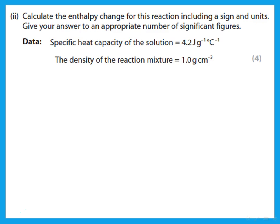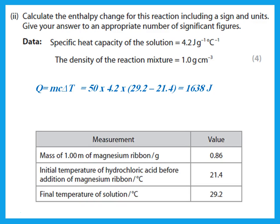Now calculate the enthalpy change for this reaction including a sign and units. First we get q = mcΔT. m is the mass of the solution — we used 50 cm³ of acid. c is the specific heat capacity, the constant 4.2. ΔT is the temperature difference: 29.2 minus 21.4. This gives a quantity of energy in joules. Then ΔH = q ÷ n, so we convert joules to kilojoules by dividing by 1000, then divide by the number of moles to get a value in kJ/mol.